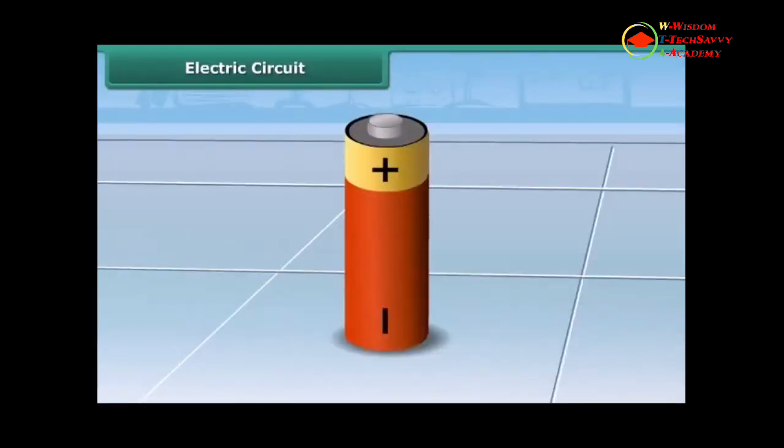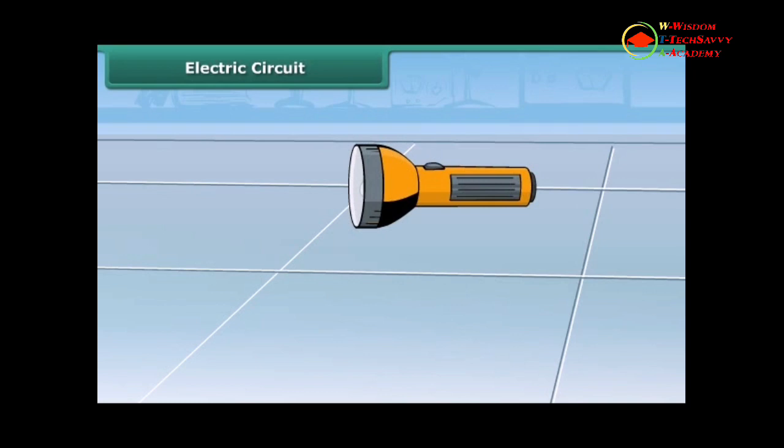An electric cell or a dry cell is the source of electricity for the bulb to glow. Let us know how the bulb in a torch glows.